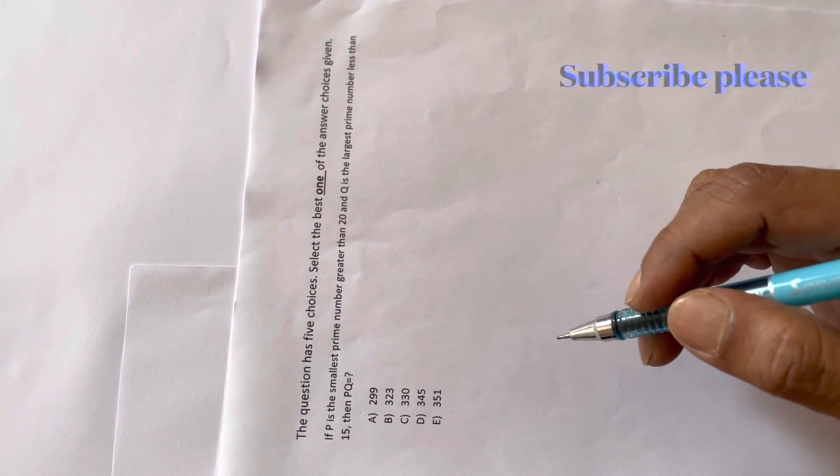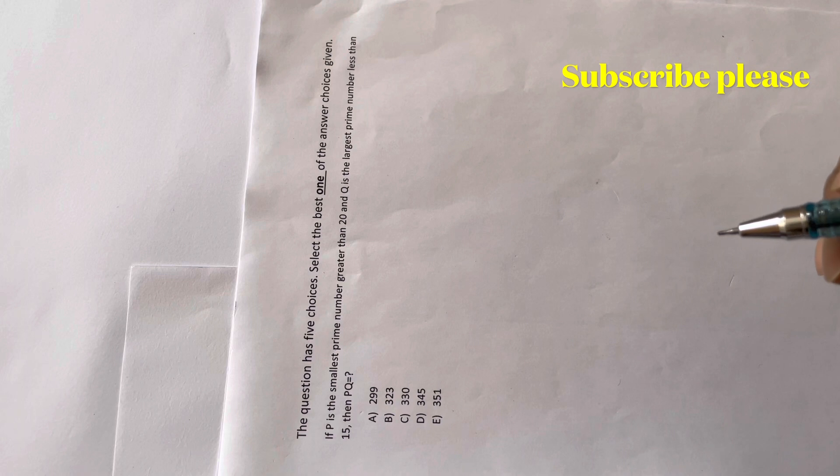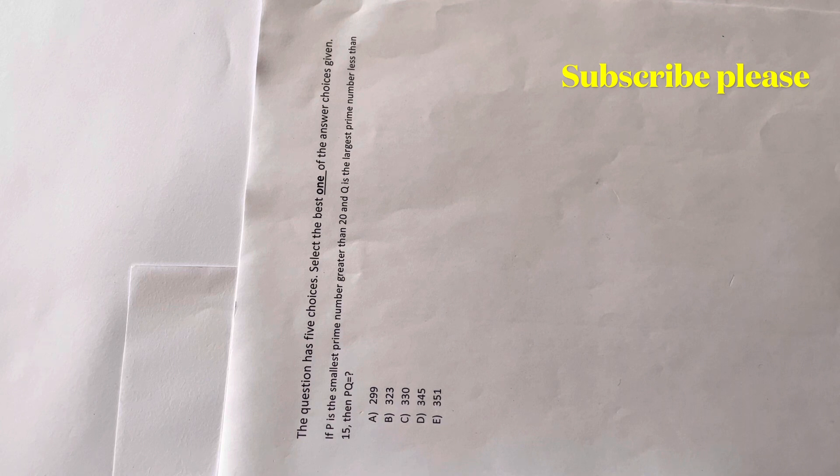In this question, p is the smallest prime number greater than 20 and q is the largest prime number less than 15. Then what will be the answer of pq? Here we have five choices and one answer is correct.